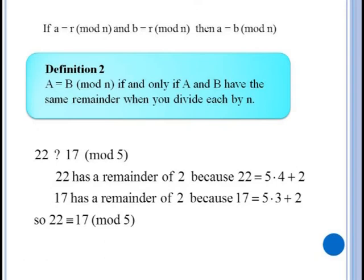Suppose we want to know if twenty two and seventeen are equivalent mod five. Dividing twenty two by five leaves a remainder of two and dividing seventeen by five leaves a remainder of two. And since both of these have the same remainder, twenty two is equivalent to seventeen mod five. In other words seventeen and twenty two both belong in the twos bucket. So they're equivalent.